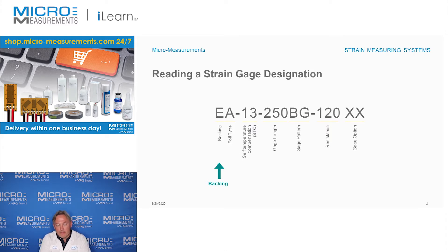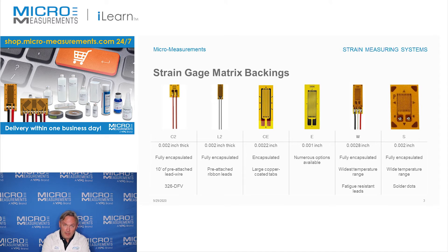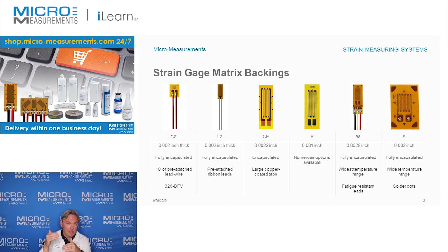If we look at the different types of backings or carriers, there are several to choose from. Working left to right on this slide, the first one is E, which represents a cast polyamide backing — one of the oldest backings used for gauges. The E backing is very flexible, so if you're installing a strain gauge on a curved surface, maybe on a small diameter shaft or down the side of a fillet, an E series gauge would be a good choice. Or if you're testing to very high strain levels — above about five percent, going to ten or even twenty percent strain — the E backing would be the one to choose.